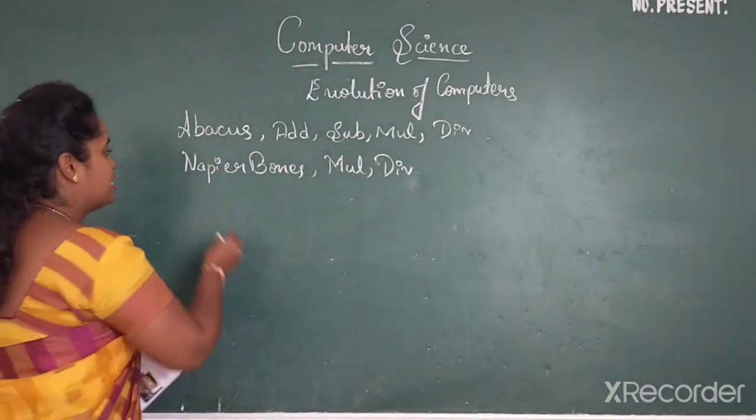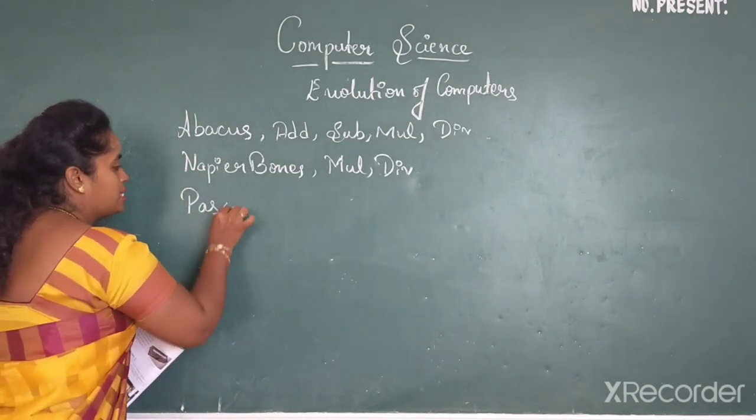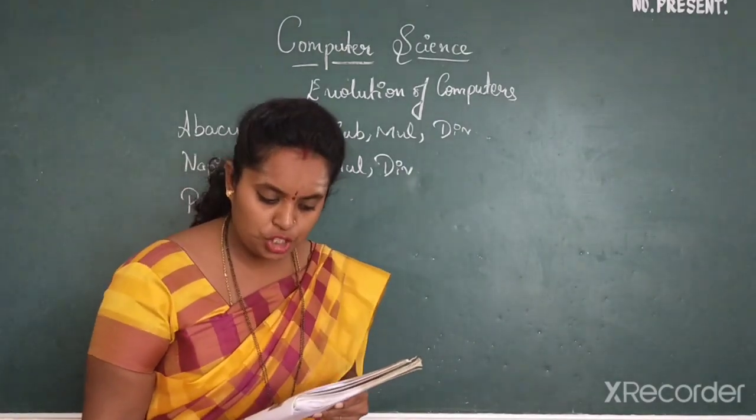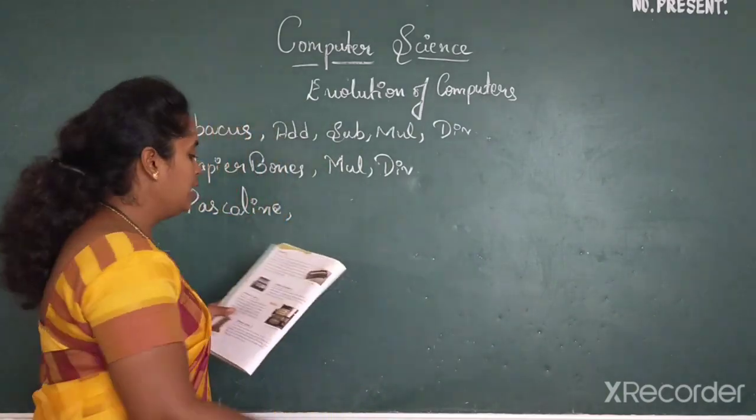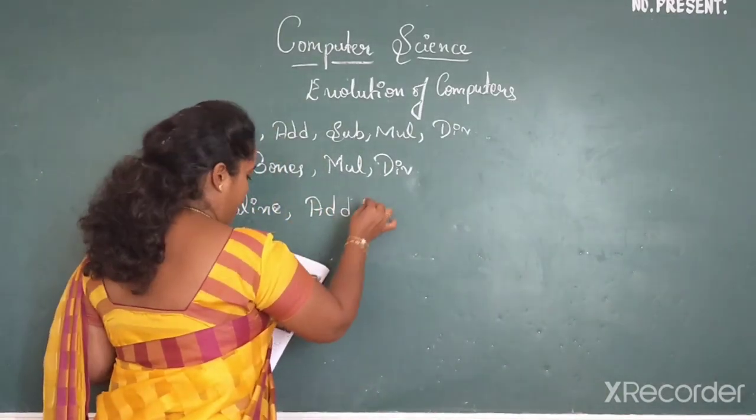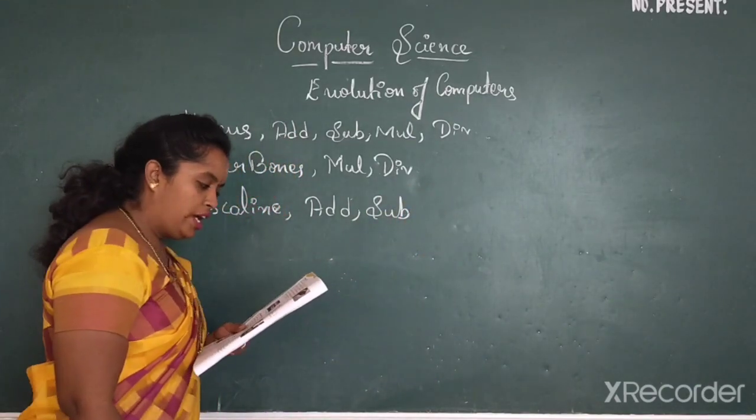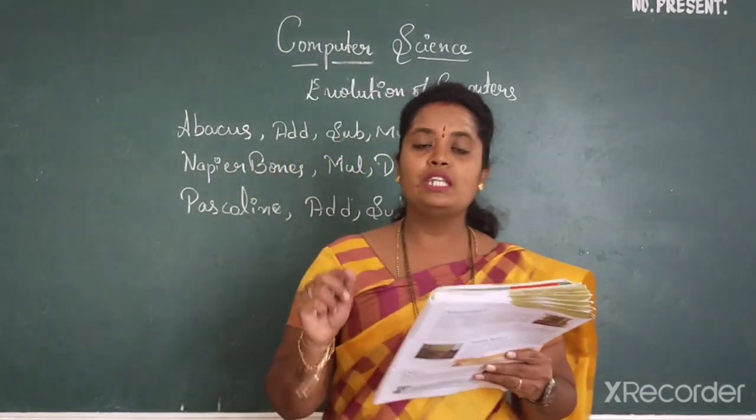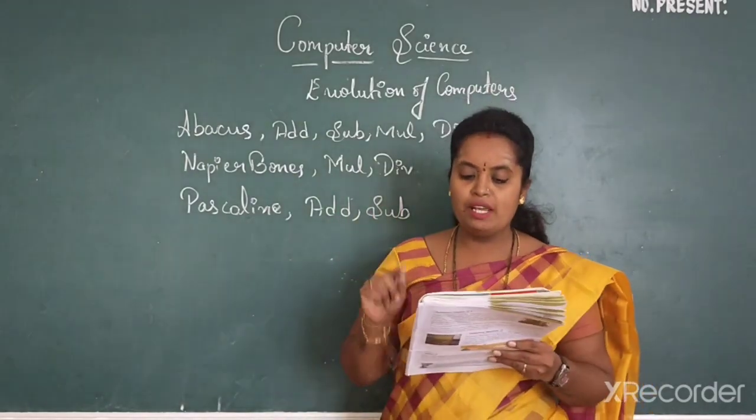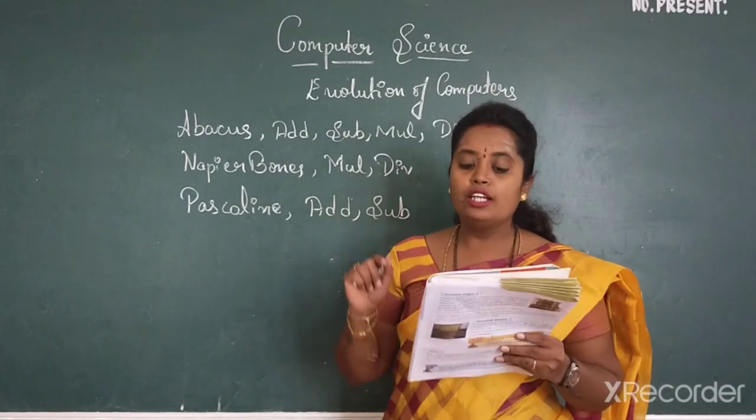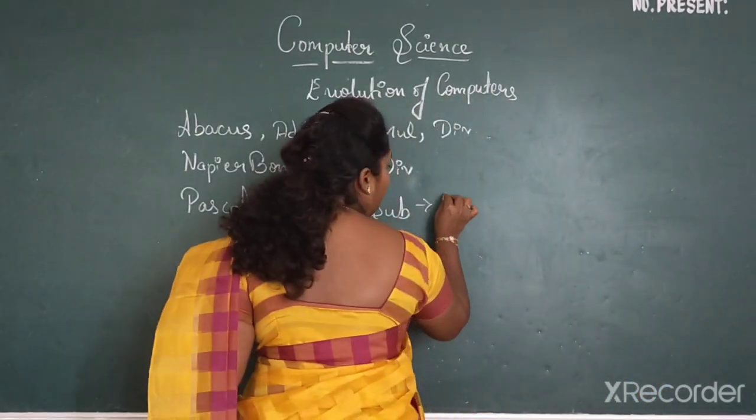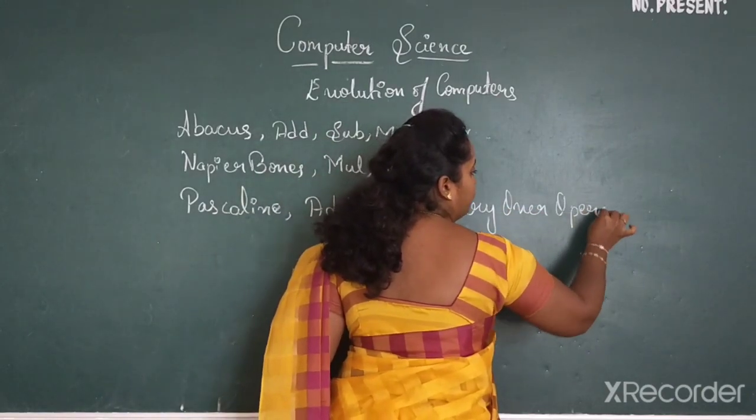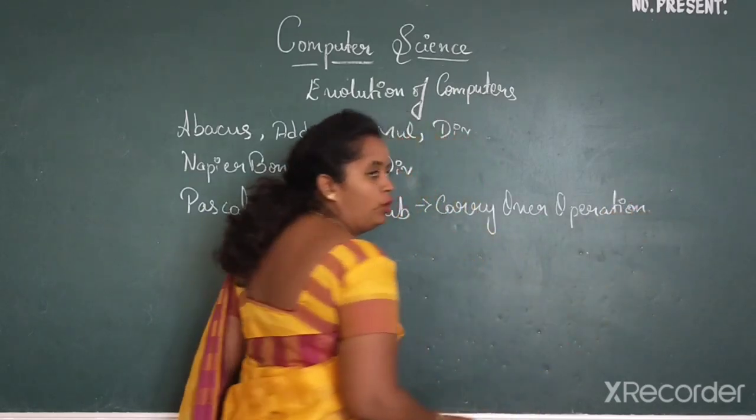The next one is Pascaline. Blaise Pascal invented this machine. He was a French mathematician who invented this. So Pascaline was used for addition and subtraction. This Pascaline machine was made up of rectangular box with 8 movable wheels. Numbers were displayed by rotating the wheels. It could also do the carryover operation.